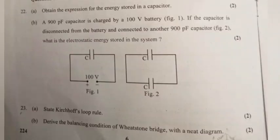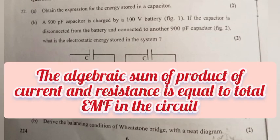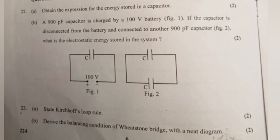Question 23A: State Kirchhoff's Loop Rule. Answer: The algebraic sum of product of current and resistance is equal to total EMF in the circuit.